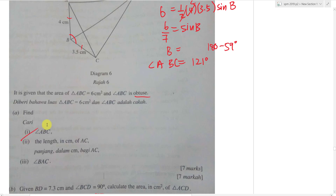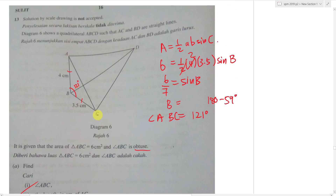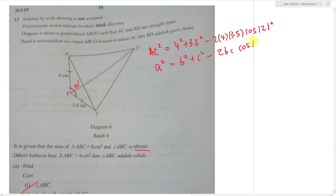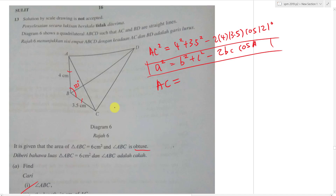Part 2: find the length of AC. Using the cosine rule: AC² = AB² + BC² − 2·AB·BC·cos(B) = 4² + 3.5² − 2(4)(3.5)cos(121°). Using a calculator: AC ≈ 6.53 cm. Part 3: find angle BAC using the sine rule: sin(BAC)/BC = sin(121°)/AC, so sin(BAC)/3.5 = sin(121°)/6.53. This gives sin(BAC) ≈ 0.4594, so angle BAC ≈ 27.35°.